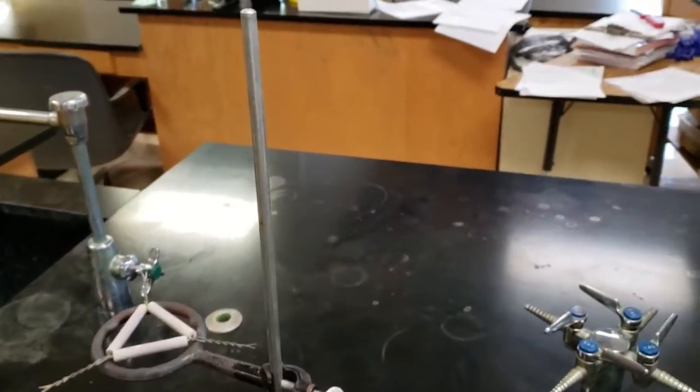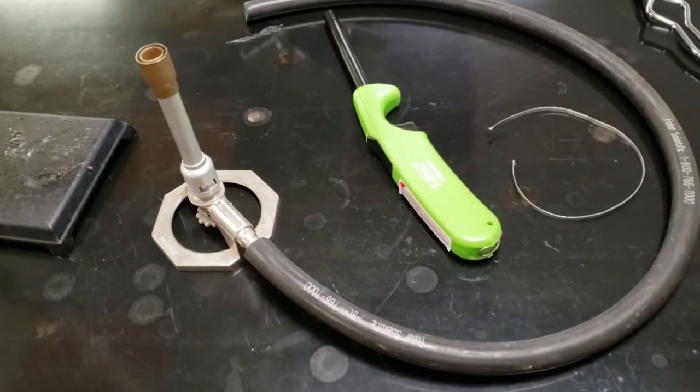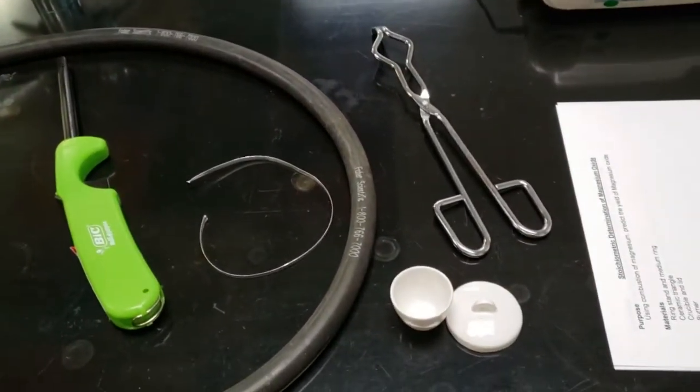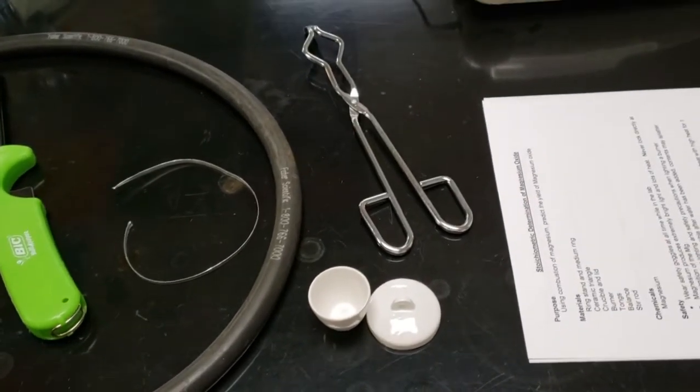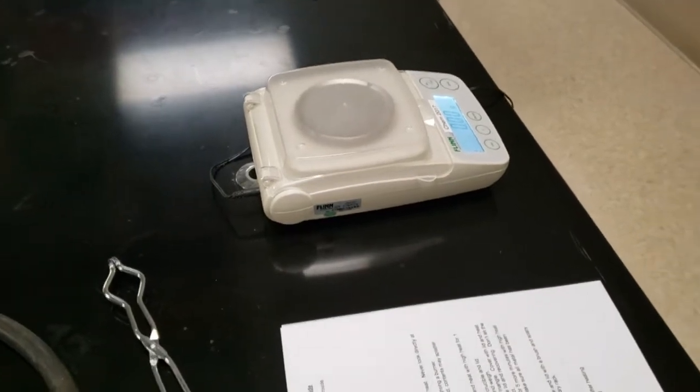Here we have a ring stand, a ceramic triangle with a ring on it, a Terrell burner, a piece of magnesium, a lighter, a crucible with a lid and some tongs and an electronic scale or a balance.